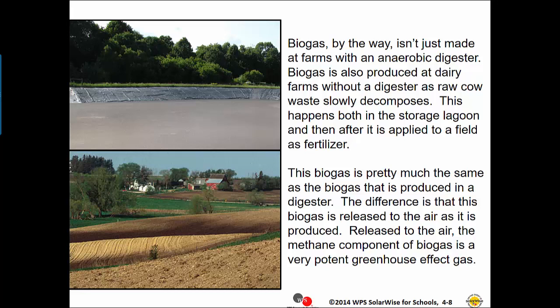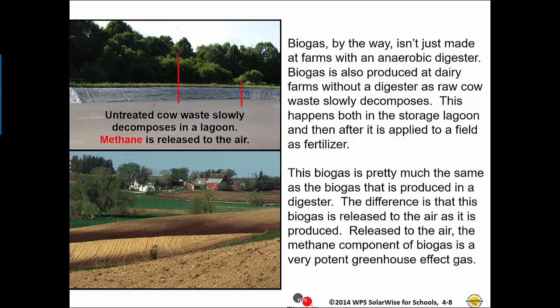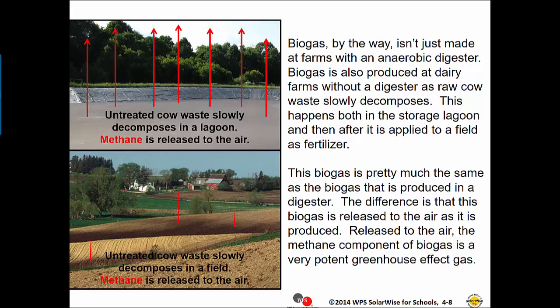Biogas isn't just made at farms with an anaerobic digester. Biogas is also produced at dairy farms without a digester as raw cow waste slowly decomposes. This happens both in the storage lagoon and after it is applied to a field as fertilizer. This biogas is pretty much the same as biogas produced in a digester, but it is released to the air as it is produced. Released to the air, the methane component of biogas is a very potent greenhouse effect gas.